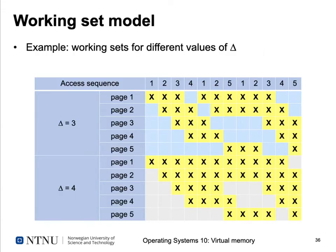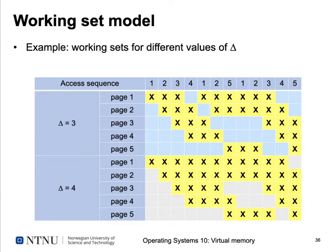Looking at an access sequence with different values of delta: for delta=3, the first three pages are in the working set, and when page 4 is accessed, page 1 falls out. When page 1 is accessed again it re-enters the working set, and so on. With delta=4, we have a larger working set — for example at the fourth access we can keep all the needed pages in a five-frame main memory, so we don't have to page out as often.